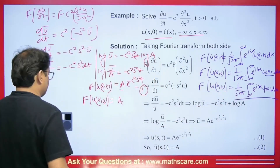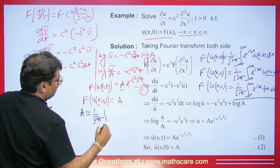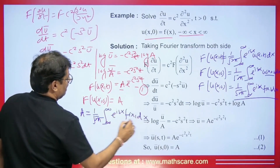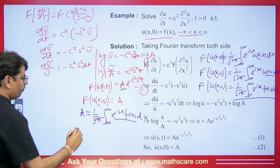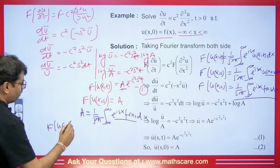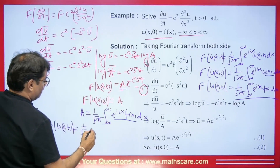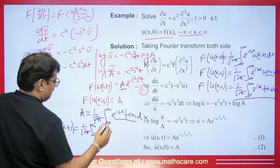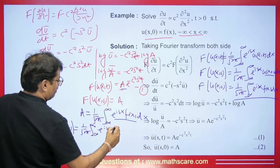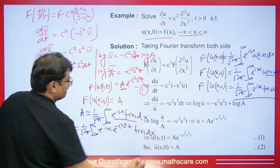From the expression ū = a · e^(−c²s²t), setting t = 0 gives ū(s,0) = a. So the value of a is: a = (1/√(2π)) ∫_{−∞}^{∞} e^{isx} f(x) dx.